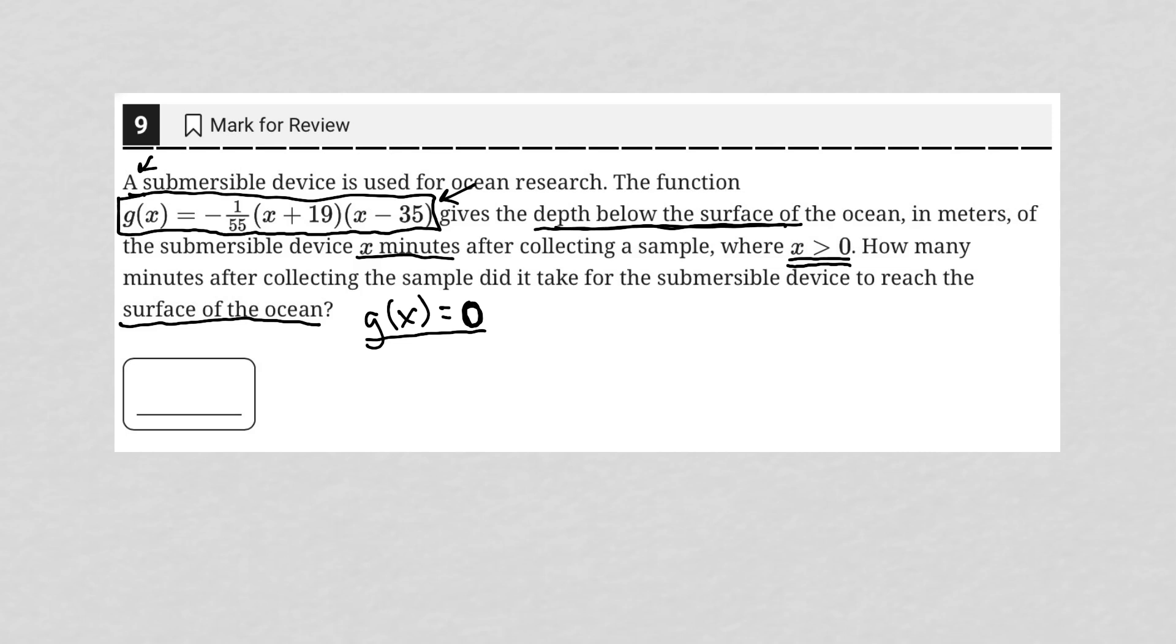And again, when we think about what do these things mean, our answer would have to be the positive 35, because x equaling negative 19 would mean that it was negative 19 minutes, that we can't have negative 19 minutes. Also, the question very clearly tells us that we want x to be greater than zero, right?